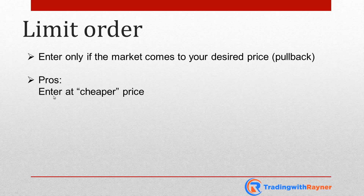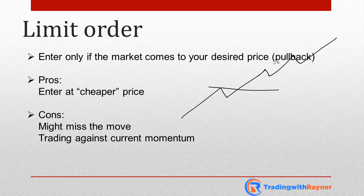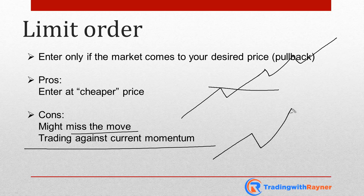The pros of a limit order is that you will be entering your trade at a cheaper price, which naturally improves your risk-to-reward. The downside is that you might miss the move, because the market doesn't necessarily have to come to the level you're waiting for — it may trend higher without pulling back to your queue level. The second downside is that you are trading against the current momentum. There are ways to circumvent this, for example waiting for a reversal candlestick pattern or a higher close, but generally if you just place a buy limit order, you are trading against the current momentum without taking anything else into consideration.